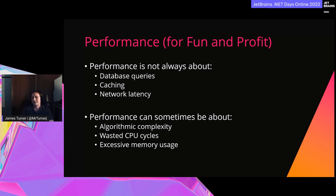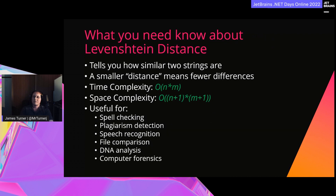This talk focuses on being smarter with algorithms and taking advantage of features available in .NET. The algorithm I'll be going through today is Levenshtein distance, and my journey to push its performance to the extreme. Levenshtein distance tells us how similar two strings are by returning a value representing the number of operations needed to transform one string into the other. The smaller the distance, the more similar the strings. If you know your Big O notation, you'll see this algorithm is pretty inefficient.